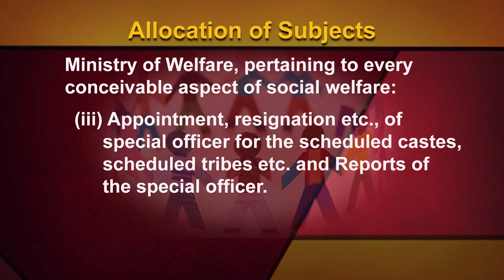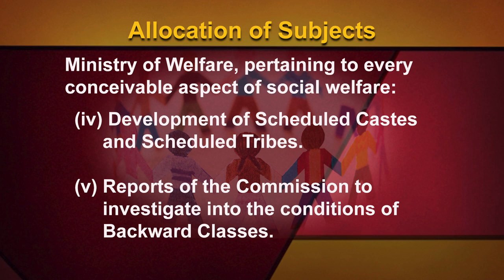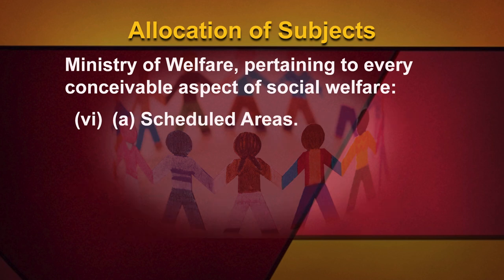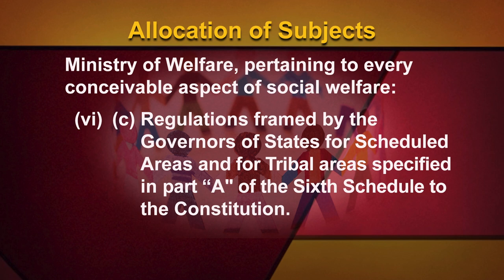3. Appointment, resignation, etc. of special officers for the scheduled castes, scheduled tribes, etc., and reports of the special officer. 4. Development of scheduled castes and scheduled tribes. 5. Reports of the commission to investigate into the conditions of backward classes. 6. Scheduled areas. 7. Matters relating to autonomous districts of Assam, excluding roads, bridge works and ferries. Regulations framed by the Governors of States for scheduled areas and for tribal areas specified in Part A of the Sixth Schedule to the Constitution.